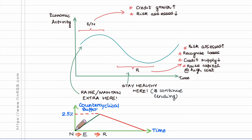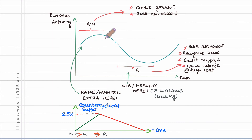— a requirement which progressively builds up from zero percent to the maximum level of two and a half percent, then during this time banks will be forced to raise and maintain an extra level of capital. This is not really a big problem because during this period capital is abundantly available and at a low cost.